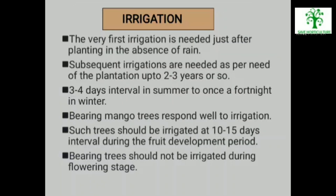Irrigation: The very first irrigation is needed just after planting in the absence of rain. Subsequent irrigations are needed as per the need of the plantation up to 2 to 3 years or so. The interval between each irrigation may be 3 to 4 days in summer to once a fortnight in winter, depending upon type of soil and climatic conditions. Bearing mango trees respond well to irrigation and produce more yield by increasing fruit setting and fruit retention. Such trees should be irrigated at 10 to 15 days intervals during the fruit development period.